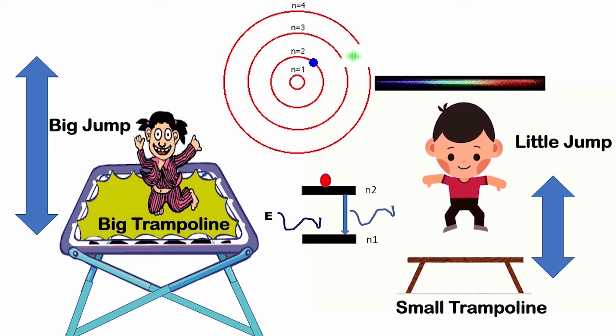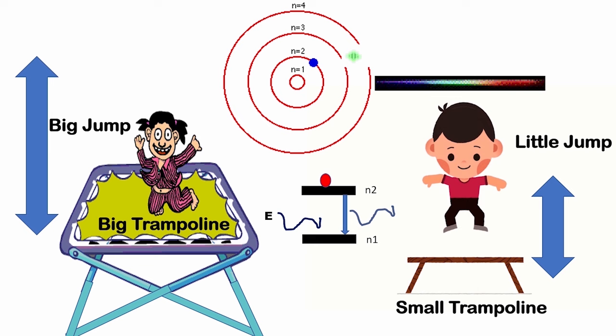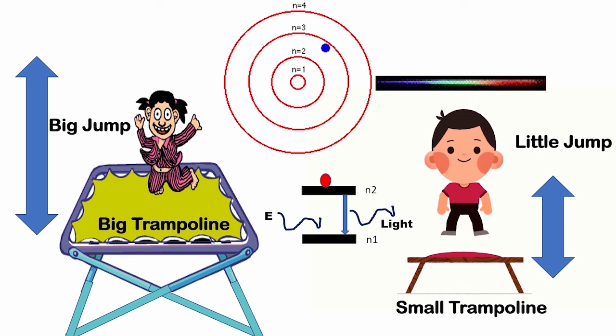Moving to the higher energy level, to make an electron from one energy level to higher energy level, you need to give it energy. Just like you need to give the boy more force to bounce higher on the small trampoline.